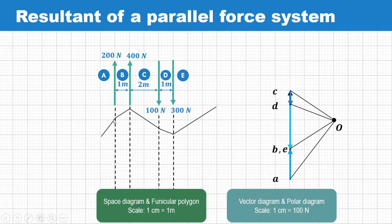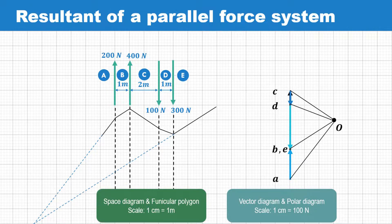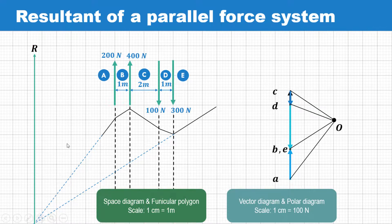The first line drawn was parallel to OA and the last line was parallel to OE. We extend these lines, and where they meet is the point of action — the line of action of the resultant R. The resultant R is acting in the upward direction as indicated by AE from starting point to end point.